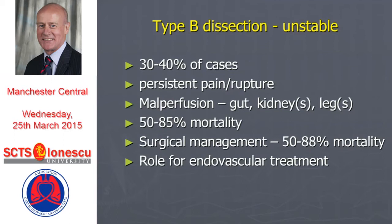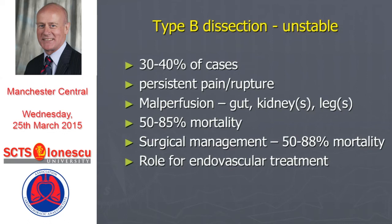We've just heard about the malperfusion picture in type A dissection, but of course it's the type B part of the type A dissection that causes the problem. We certainly see it in type B dissection — the gut and legs are probably the type B manifestations that we worry about most. Kidneys tend to be less critical; you can lose one kidney. Gut and leg malperfusion is associated with an unpleasantly high mortality, and unfortunately the surgical intervention is also associated with high mortality, which really begs a role for endovascular therapy. Is there anything else we can do to modify this dreadful scenario when surgical management still yields poor results?